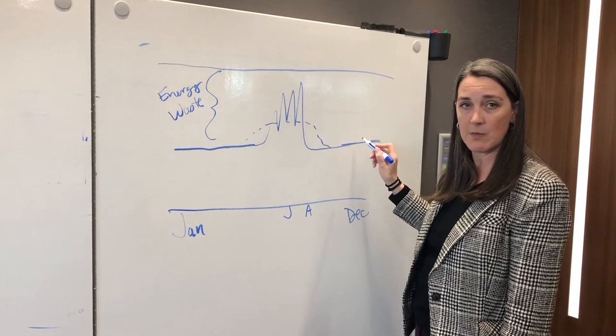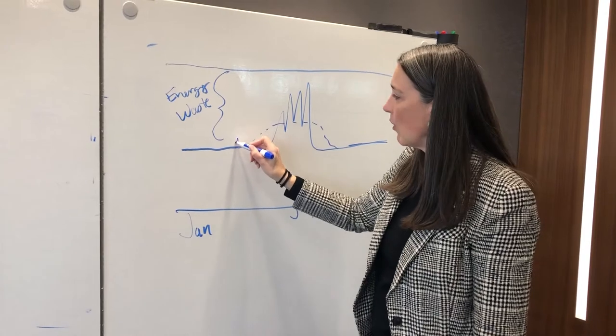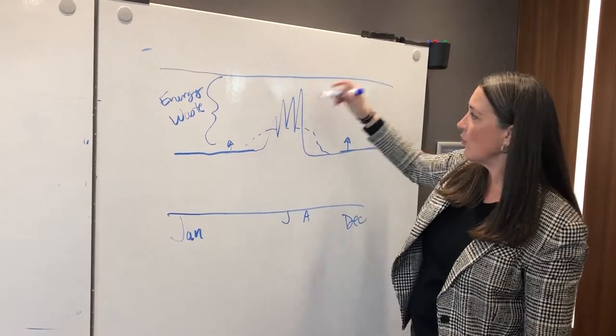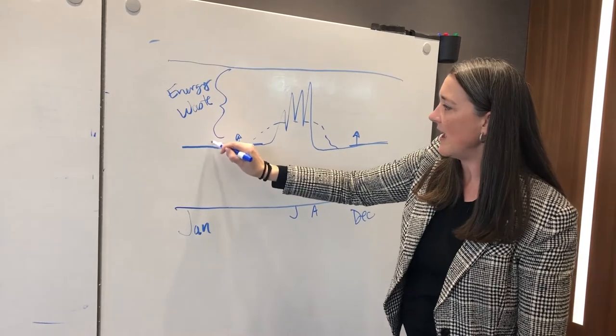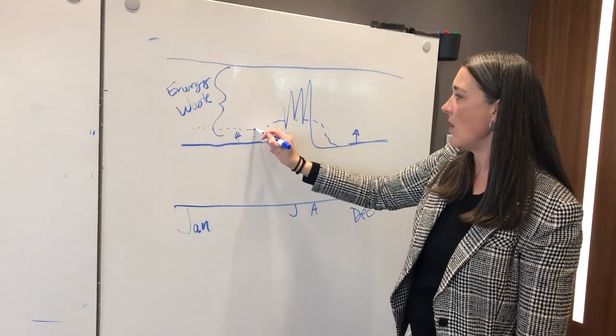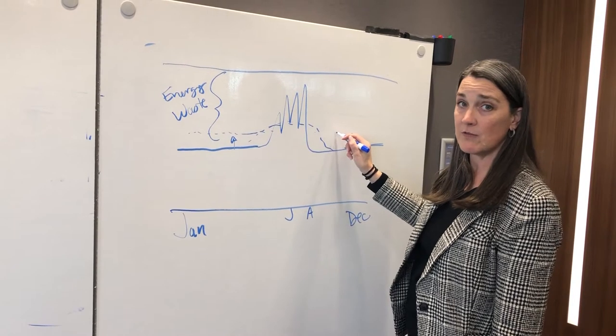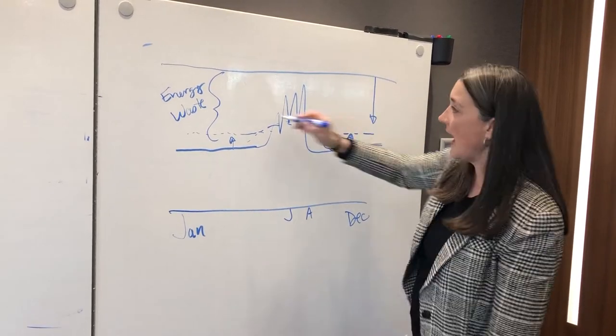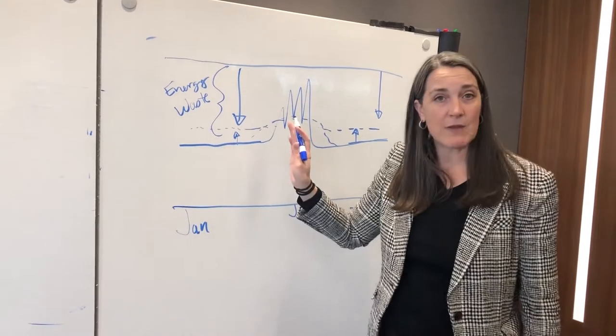Shave the peak in the summer and then grow the base load with electric vehicles. So imagine being able to have a little more base load all year round, a little bit of a curve for the summer peak, and then you can reduce how much supply we need throughout the year.